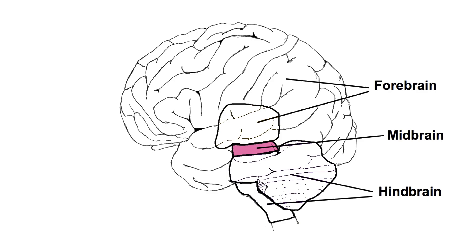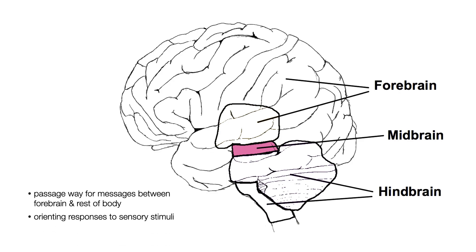The midbrain, which we can see in pink, is the topmost part of the brainstem. It provides a passageway for messages traveling between the forebrain and the rest of the body via the spinal cord. It is also responsible for orienting responses to sensory stimuli. For example, if you have a ball flying at your head, you can thank the midbrain for coordinating your unconscious automatic response to duck or block the ball before the conscious part of the brain has had a chance to process what is going on.